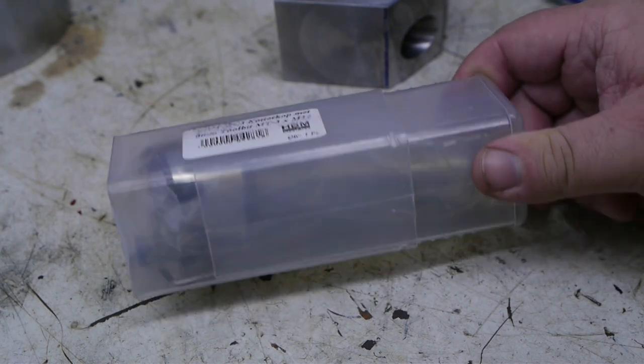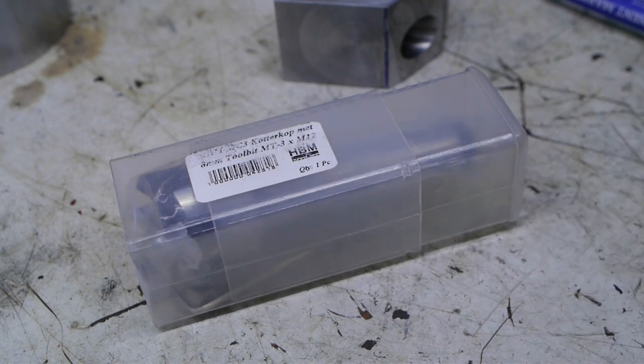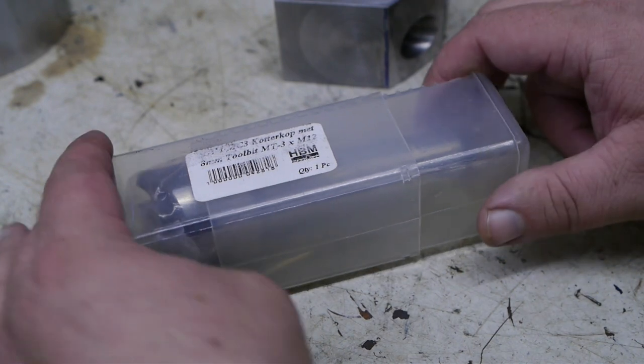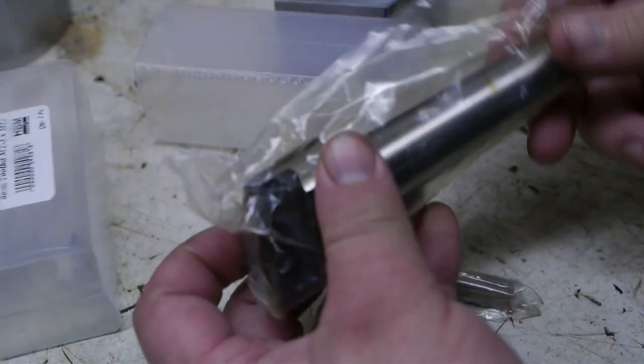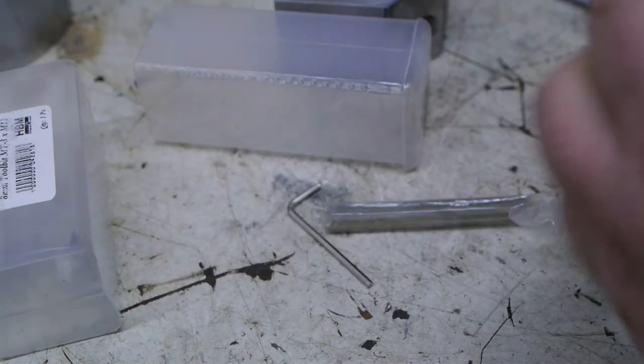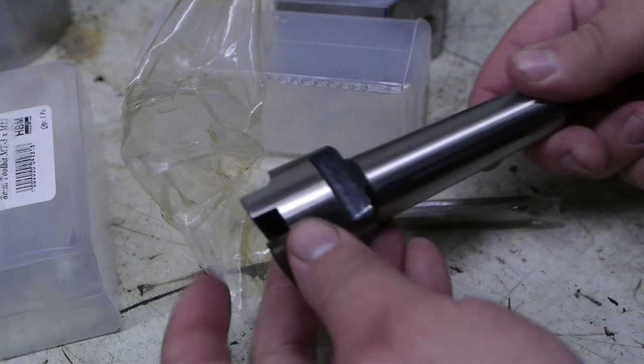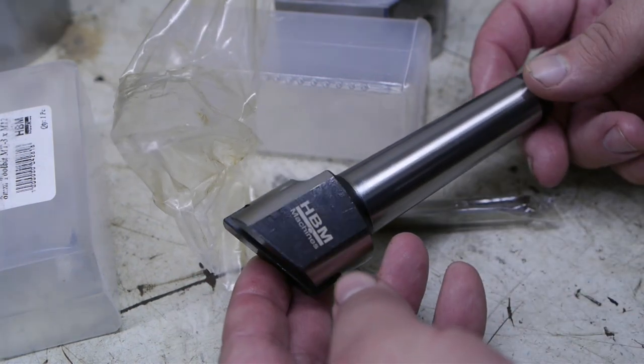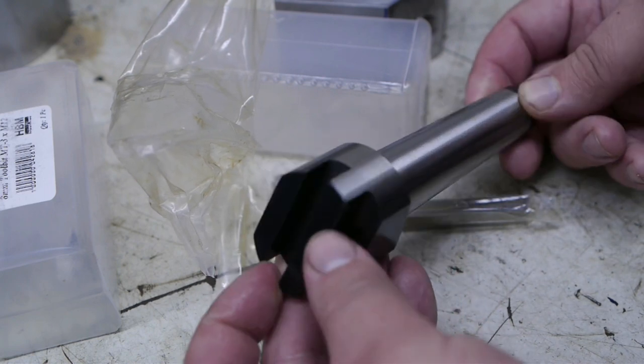This here is my brand new fly cutter, never used. I think I bought it well over a year ago from HBM, and that is probably the biggest reseller of Chinese tools in the Netherlands. I think it cost 10 euros, and for that kind of money you really cannot make it yourself. Well, it sure looks pretty enough.